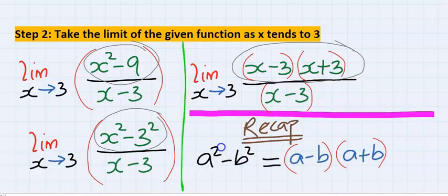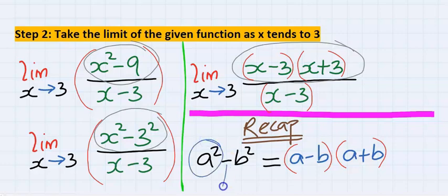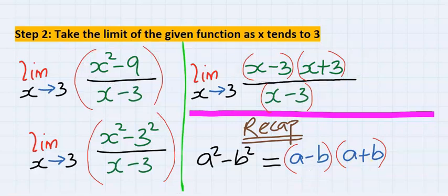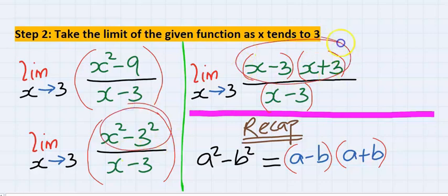Recap the law governing difference of two squares. A squared minus b squared is equal to a minus b in brackets, a plus b in brackets. This rule was applied to the numerator of this function.